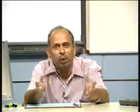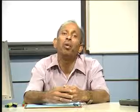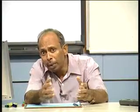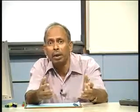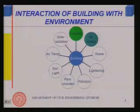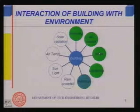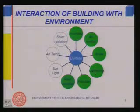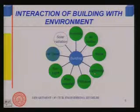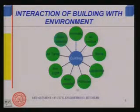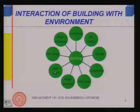The building must also provide a comfortable environment. Comfortable internal environment must be maintained against external conditions. The components of the external environment include humidity, air motion, noise, lightning, pollution, rain or snowfall (precipitation), sunlight, air temperature, and solar radiation. These are the external environmental factors with which the building interacts.